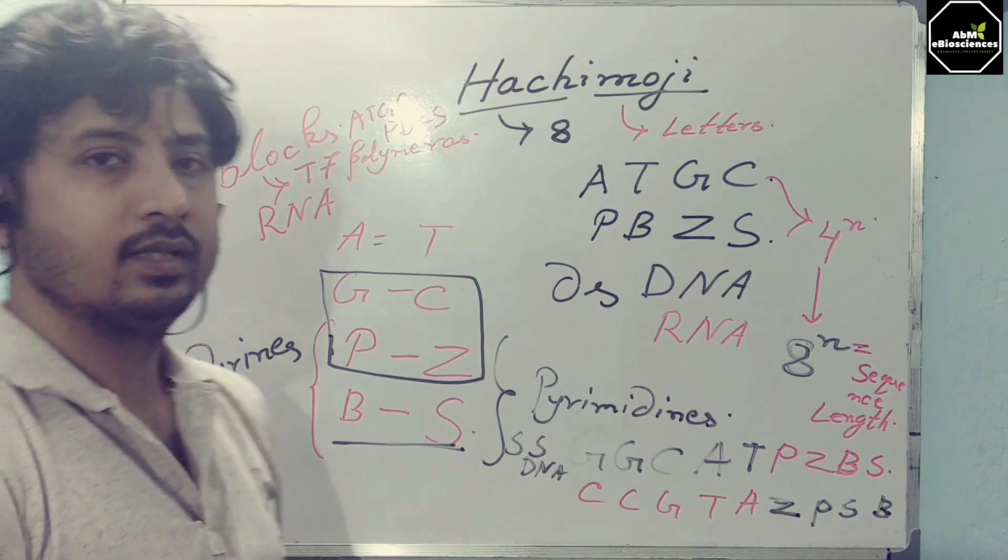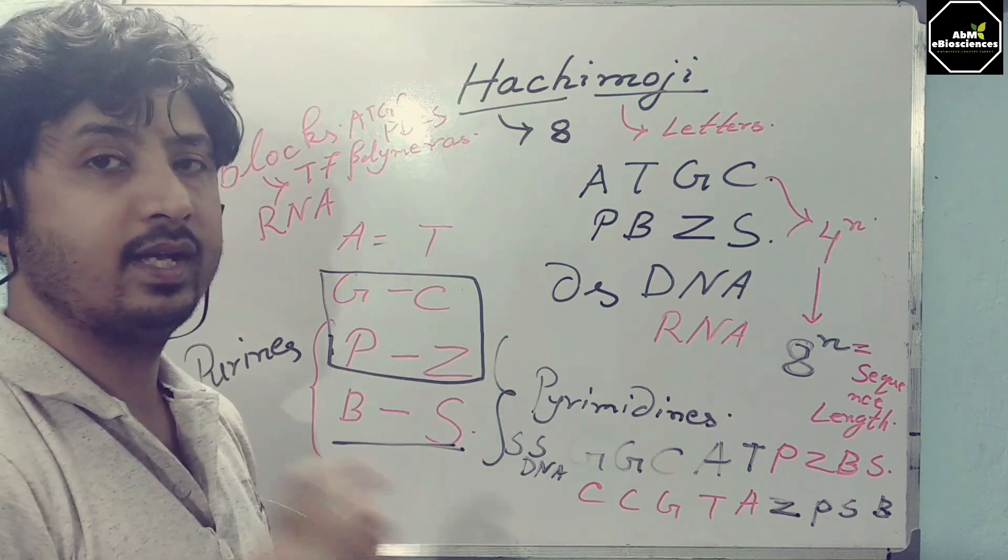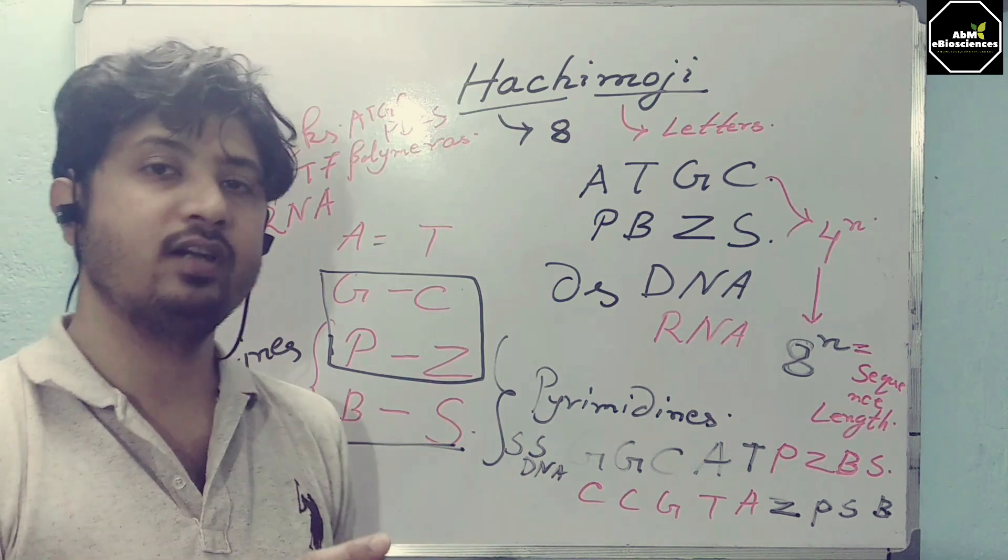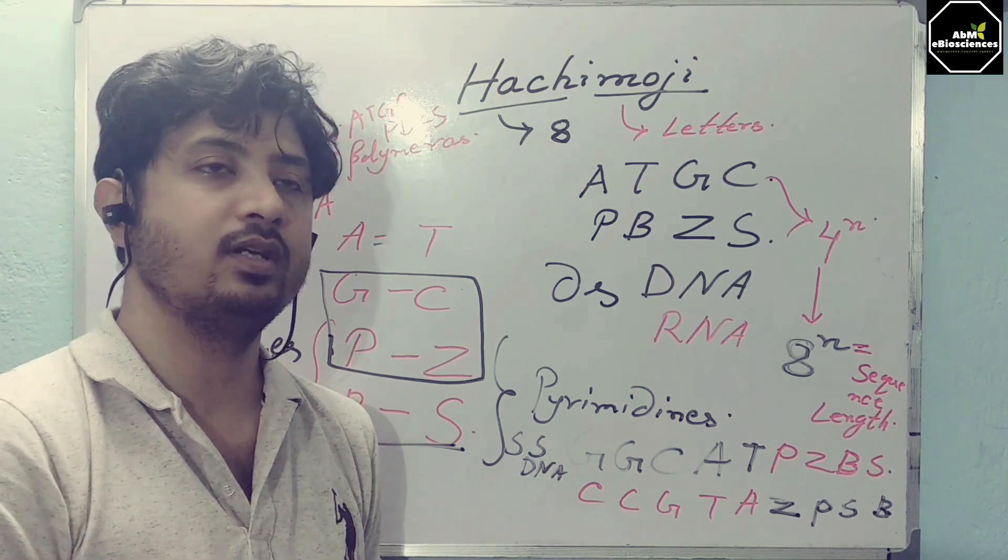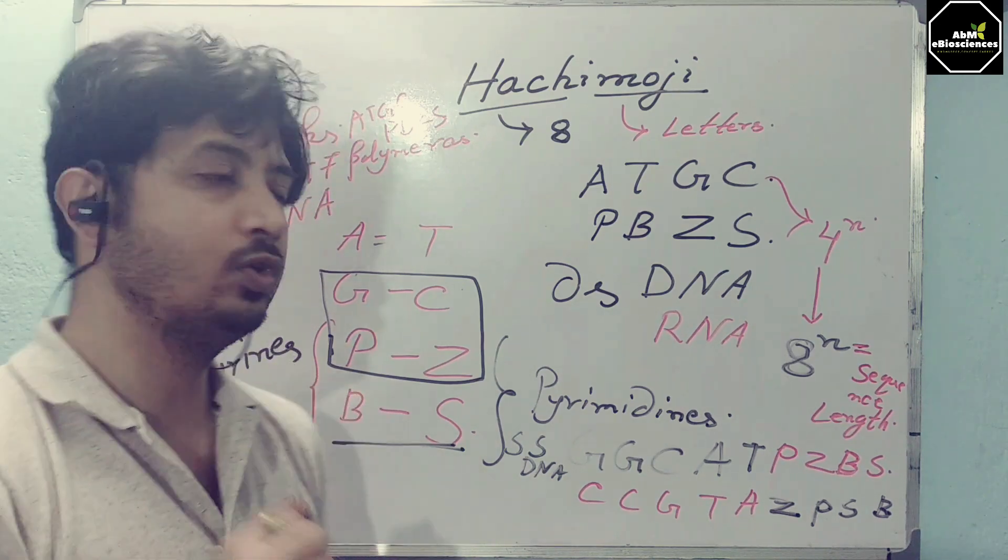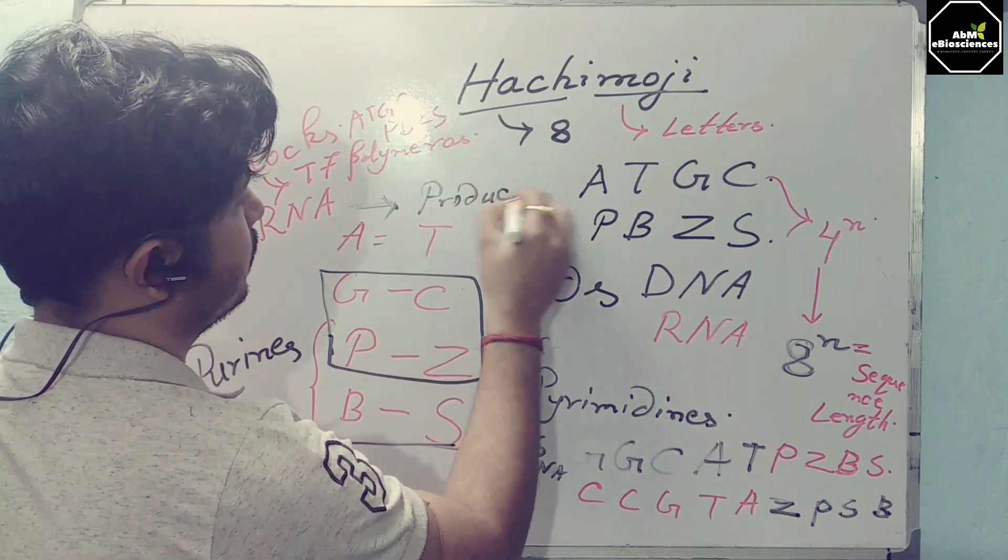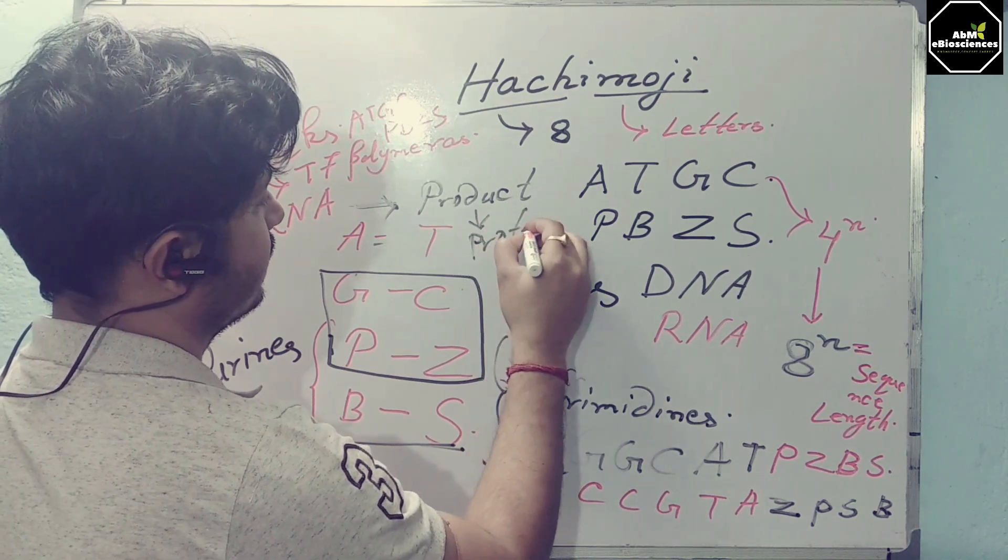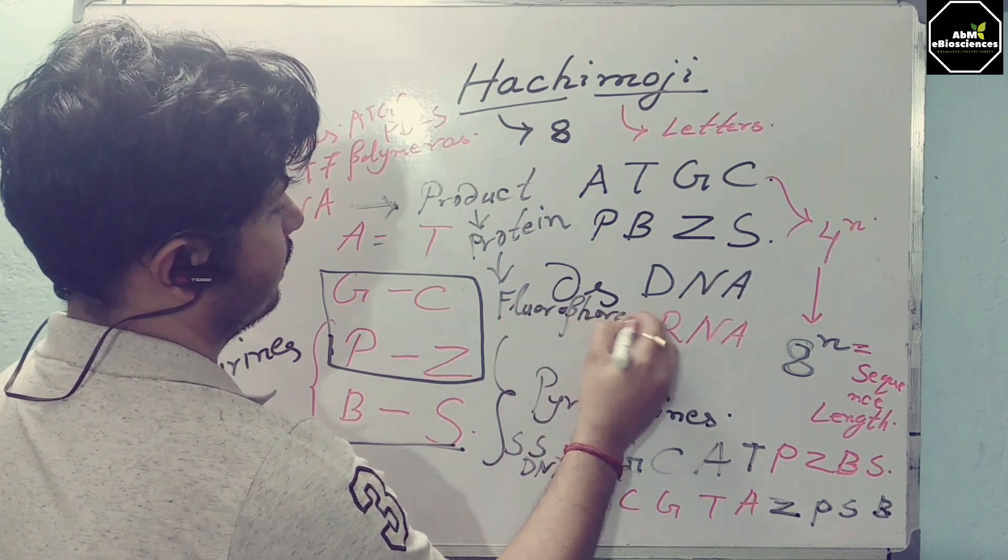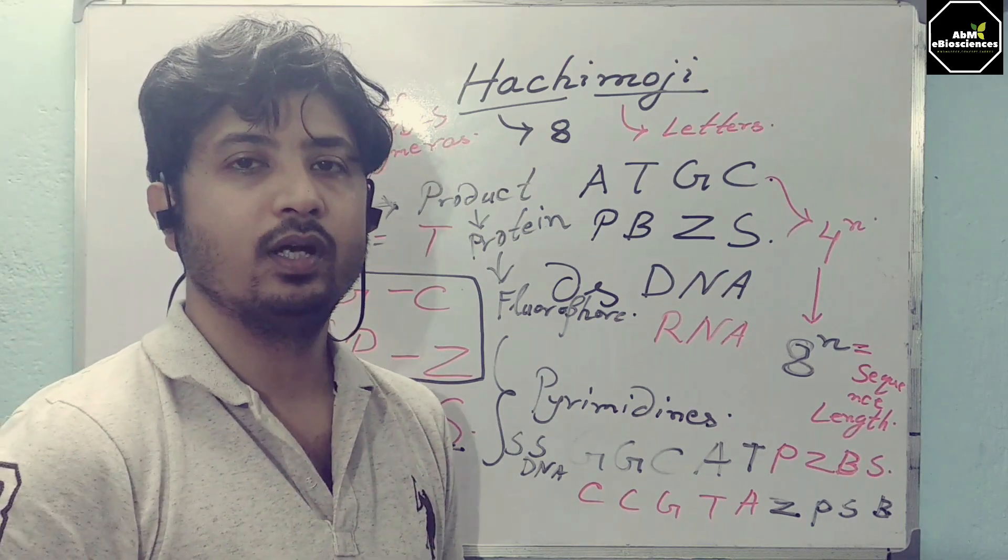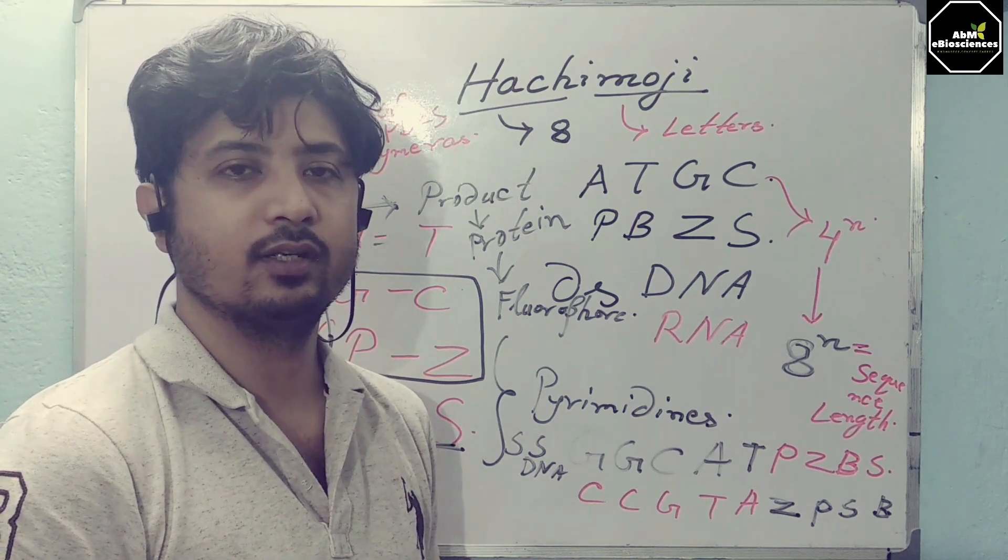T7 polymerase is used in this study, which can convert that DNA form containing ATGCPBZS genome into RNA form. That RNA form can be functionally shown in the form of fluorophore reagent in a tube. This can finally give product—protein in the form of fluorophore or fluorogenic substance—which gives you a color that can be seen with the naked eye, and you can observe the fluorescence.